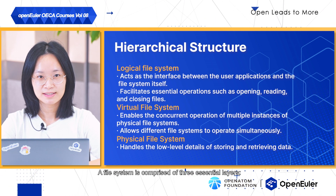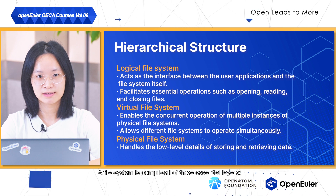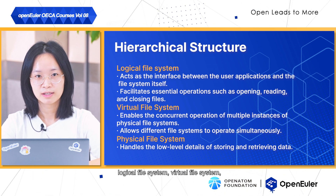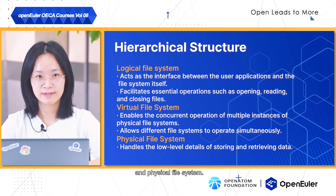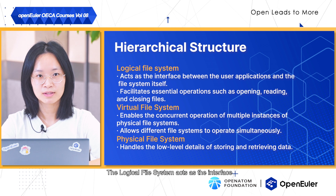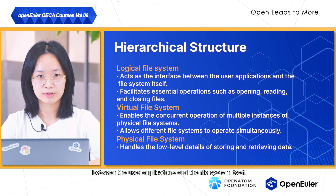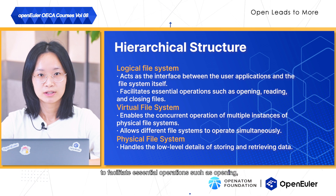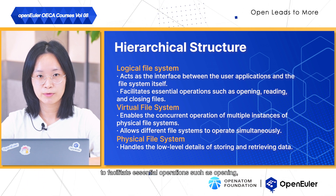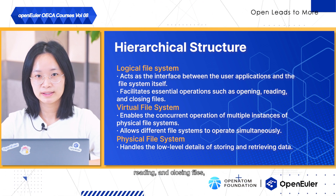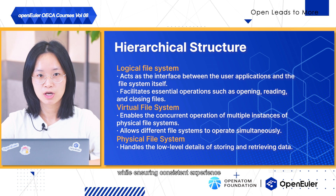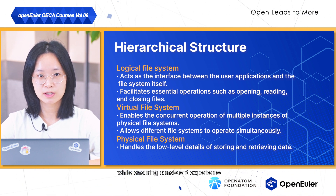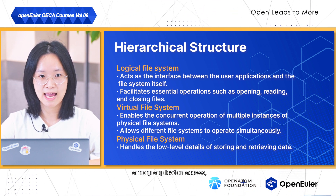A file system is comprised of three essential layers: the logical file system, the virtual file system, and the physical file system. The logical file system acts as the interface between the user applications and the file system itself, serving as the user-friendly front-end to facilitate essential operations such as opening, reading, and closing files.